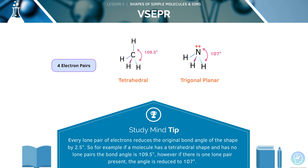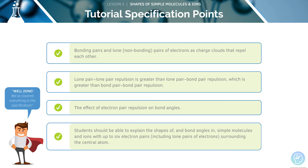Every lone pair of electrons reduces the original bond angle of the shape by 2.5 degrees. So for example, if a molecule has a tetrahedral shape such as methane and no lone pairs, the bond angle is 109.5 degrees. However, if there is one lone pair present, as shown in ammonia, the angle is reduced to 107 degrees. We've now covered all the learning objectives for this lesson. Feel free to skip back through the video and re-watch anything you are unsure about.